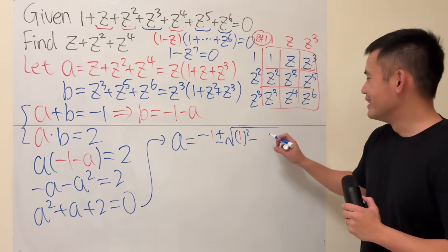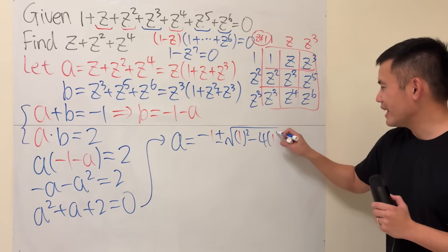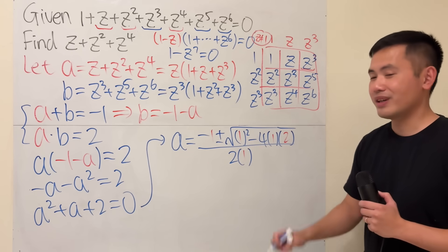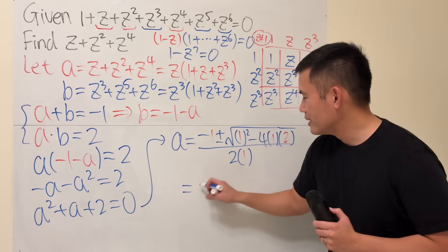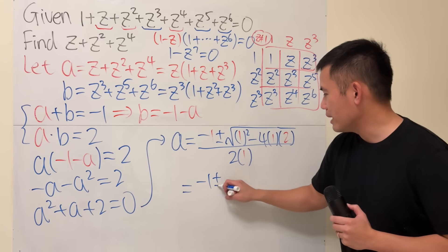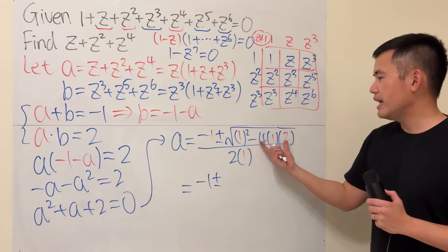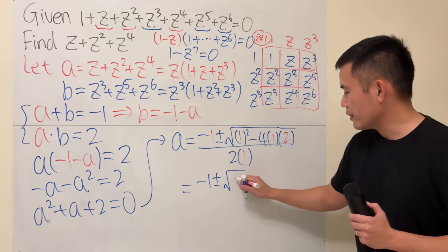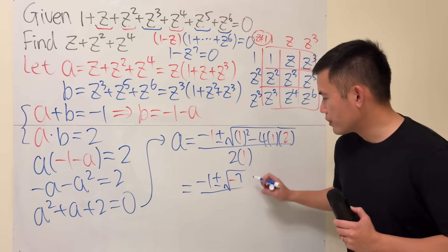a is equal to negative 1 plus or minus square root of 1 squared minus 4 times 1 times 2, all divided by 2 times 1. Work this out real quick. This right here is just negative 1 plus or minus. This is 1, and this is 8. 1 minus 8 is negative 7. So, square root of negative 7 over 2.